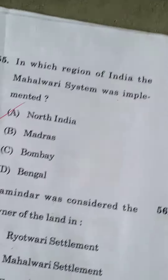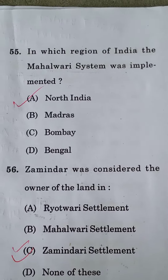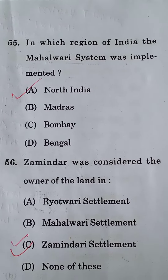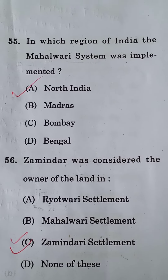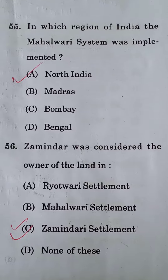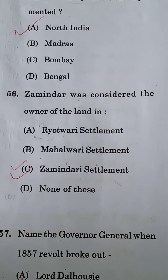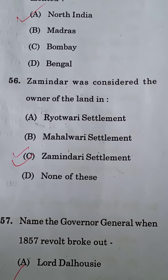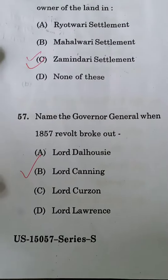Moving ahead to our next question: in which region of India was the Mahalwari system implemented? The Mahalwari system was implemented in North India. In the Zamindari settlement, the Zamindar was considered the owner of the land.